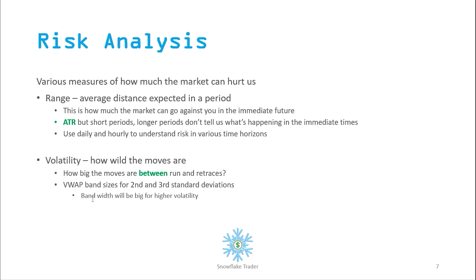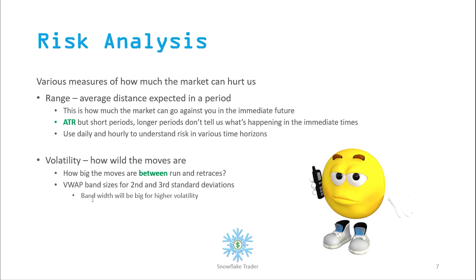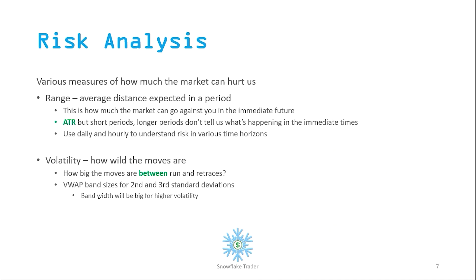Another way of looking at volatility is comparing second and third standard deviation moves using VWAP bands or Bollinger bands. When the bandwidth of these volatility indicators expand, that means the size of the moves could be bigger and can move against you farther than you expect. When these bands are shrinking, that means the volatility for that instrument is going down and you can expect smaller moves against you.